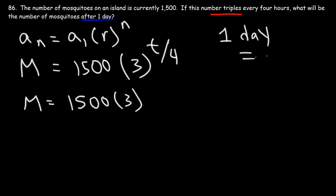We know that one day is equal to 24 hours. We want the unit, or we want t to be in hours, because it triples every four hours. So we don't want to plug in one day for t.